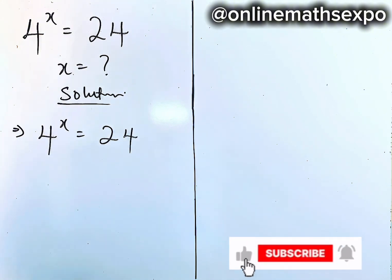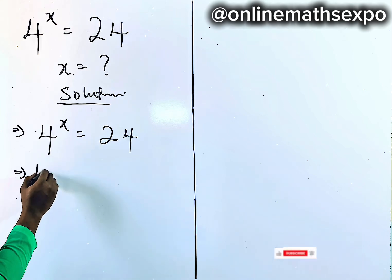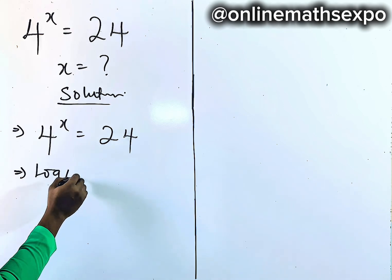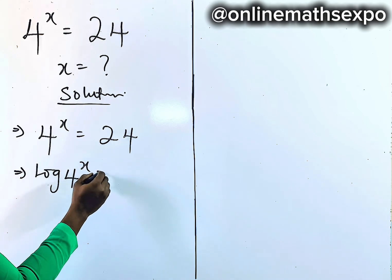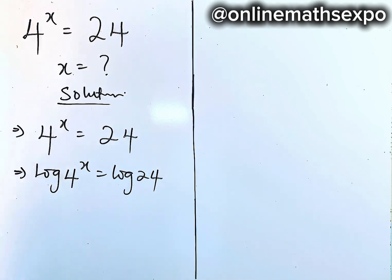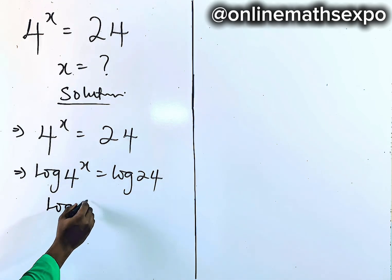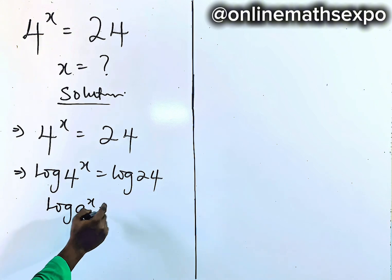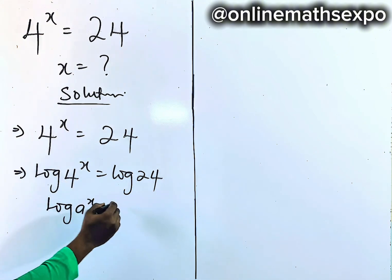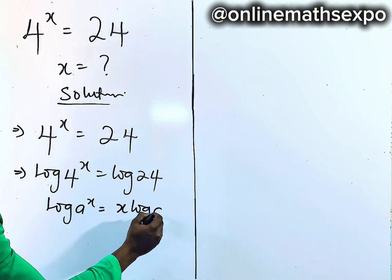What we do here is just quickly take the logarithm of both sides. So we have log of 4 to the power of x is equal to log of 24. Now remember at this point, for every log of a to the power of x, the power multiplies, so it gives you x·log a.